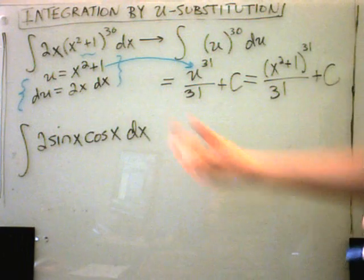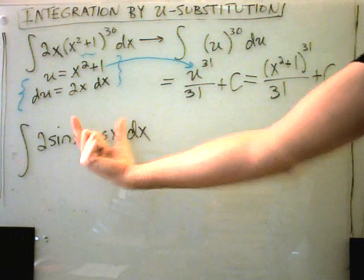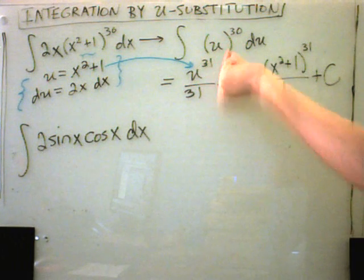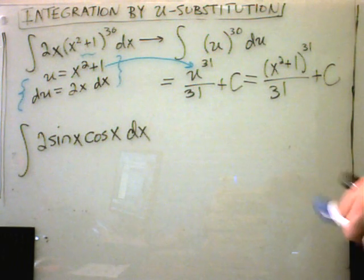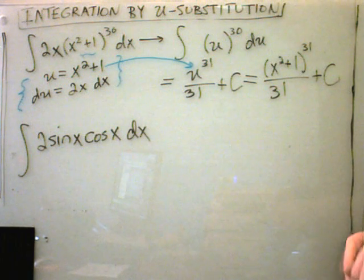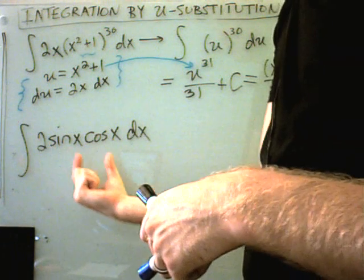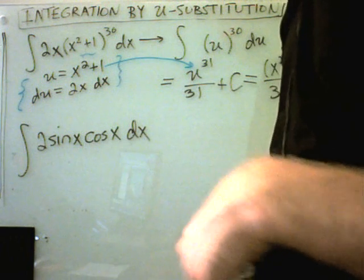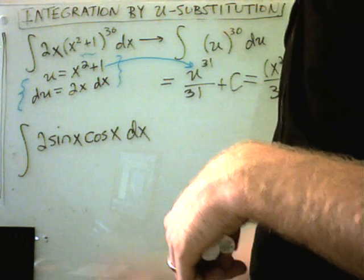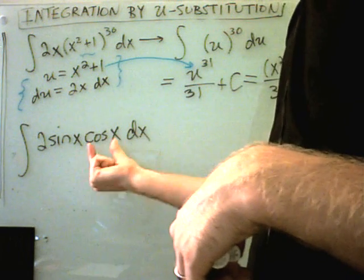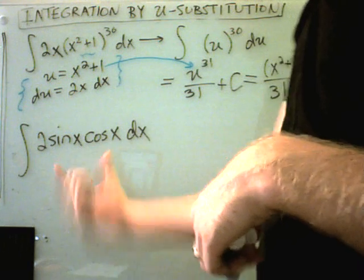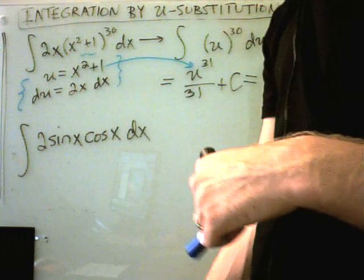So the trick is you're trying to somehow just relabel things and turn it back into an easier problem that you already know how to deal with. And the next problem, sine times cosine, that's not one of the basic antiderivative formulas. Certainly we can do sine individually and cosine individually, but together they pose a little bit more of a problem.